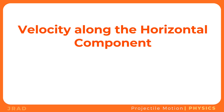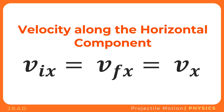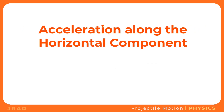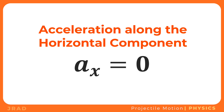For easier reference, x will be added to the subscript of quantities for the horizontal component, while y will be added for the vertical component. The subscripts i and f will still be used to indicate initial and final states. Since the velocity along the horizontal component is constant, the initial velocity equals the final velocity at any time interval, and since velocity is constant along the x-component, the acceleration along x is equal to zero.